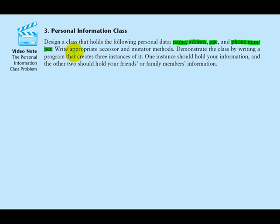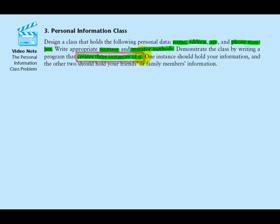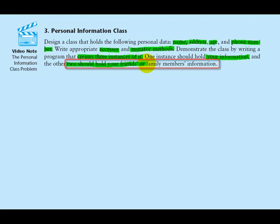We also are asked to write appropriate accessor and mutator methods. These will be methods that set and get data for the name, address, age, and phone number fields. Once we've created the class, we will demonstrate it by writing a program that creates three instances of the class — one holding your information, and the other two holding information on friends or family members.